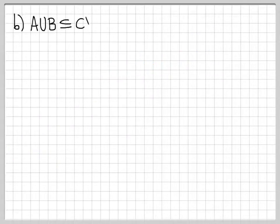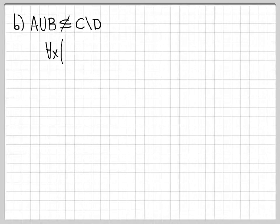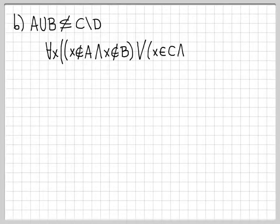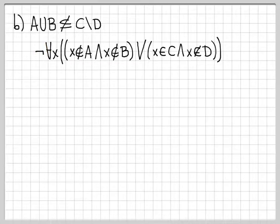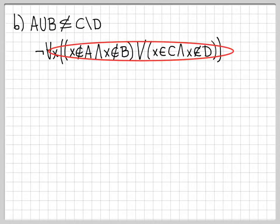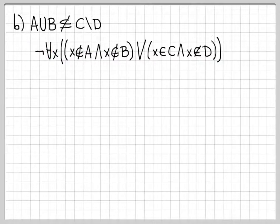Let's do another one that's very similar — the statement A union B is not a subset of C difference D. This is basically the negation of what we just worked with. So I'm going to start with the logically equivalent statement we derived, but put a not out front, because part B is really just the opposite of part A: A union B is not a subset of C difference D.